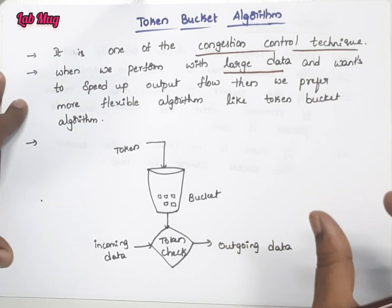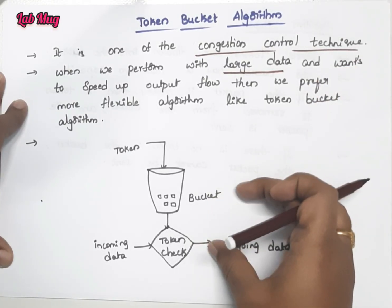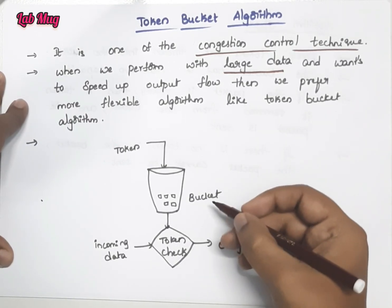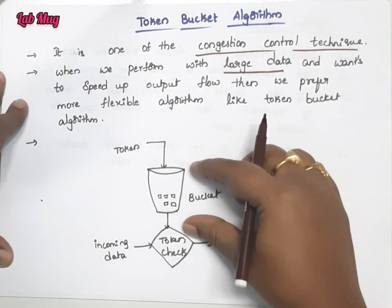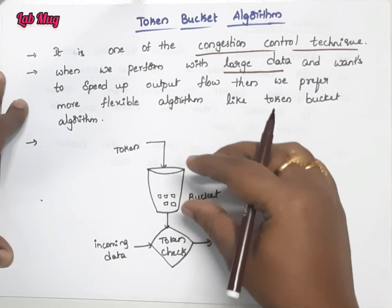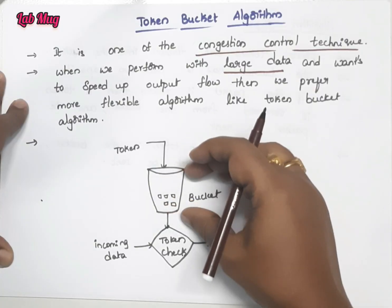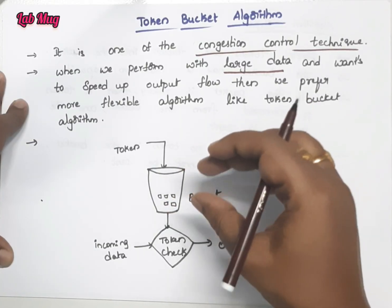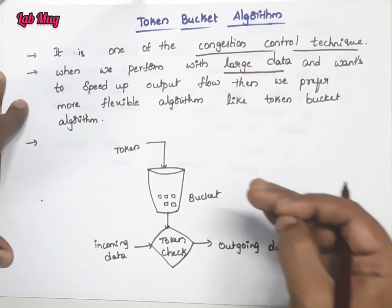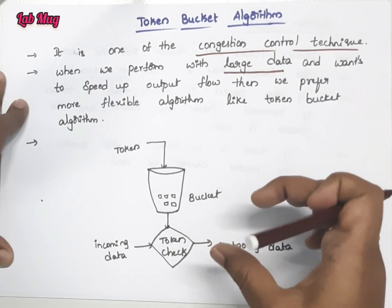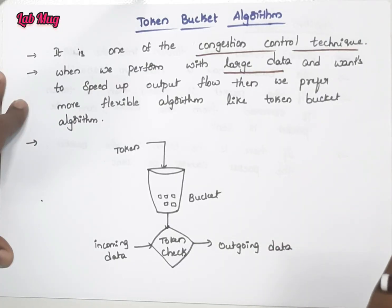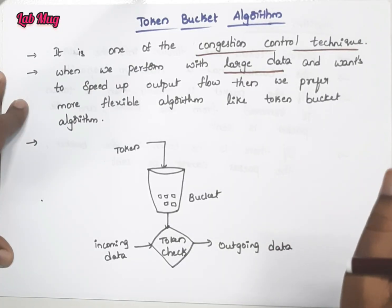In the Token Bucket Algorithm, we have a bucket in which we store tokens. When a packet needs to be sent, it must have a corresponding token. So first we store tokens in the bucket, and when a packet is ready to flow, we check for the regarding token. If a token is available, the packet is allowed to flow.